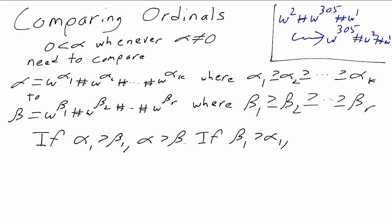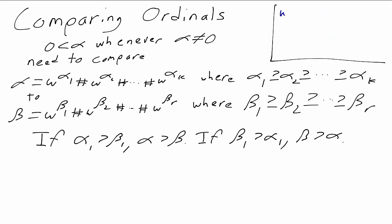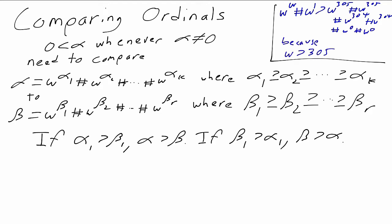The way we compare these ordinals is by starting with the first, largest exponent. If alpha one is bigger than beta one, then alpha is bigger; if beta one is bigger than alpha one, then beta is bigger. For example, omega to the omega plus omega to the one is larger than omega to the 305 plus omega to the 305 plus omega to the 304 plus omega to the 304 plus 2. As soon as we see that omega is bigger than 305, we know the first ordinal is larger — even though the second has many terms, they're all at most omega to the 305, so no amount of adding them will catch up with that omega to the omega.